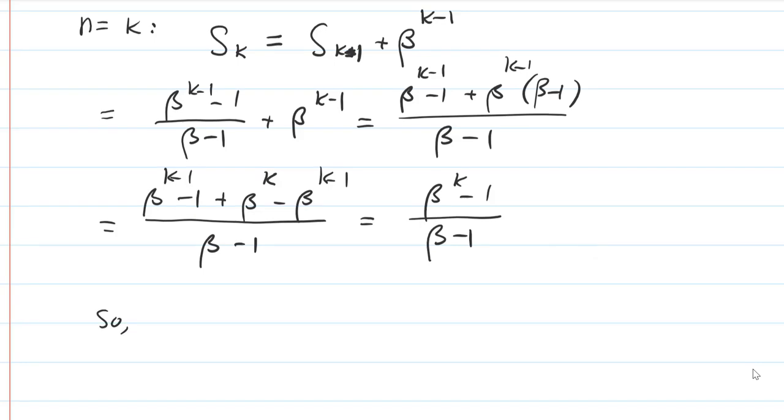Now we can go back to n. So our conclusion is that Sn is going to be beta to the n minus 1 over beta minus 1. Some of us may prefer to put 1 in the front. And this is useful when beta is less than 1, its absolute value is less than 1. But it's okay.